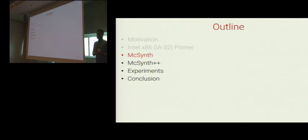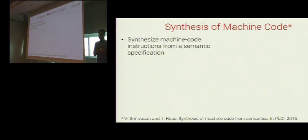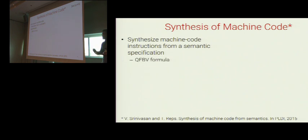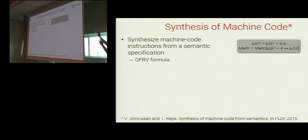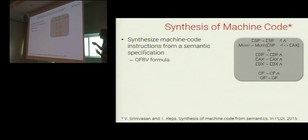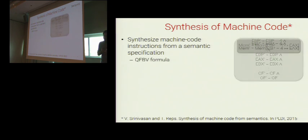Let me describe the design of MixSynth while highlighting the limitations in its synthesis algorithm. MixSynth synthesizes a machine code instruction sequence from a semantic specification of the desired behavior. Machine code analyzers usually convert instructions into some semantic representation and work at that semantic level. An example is a quantifier-free bit vector logic formula, or QFBV formula. For example, the IA-32 push instruction has a syntax and a semantics: the QFBV formula clearly describes what push does — it updates the stack pointer register and updates the memory location. The formula usually also contains identity conjuncts for portions of the state unmodified by the instruction.